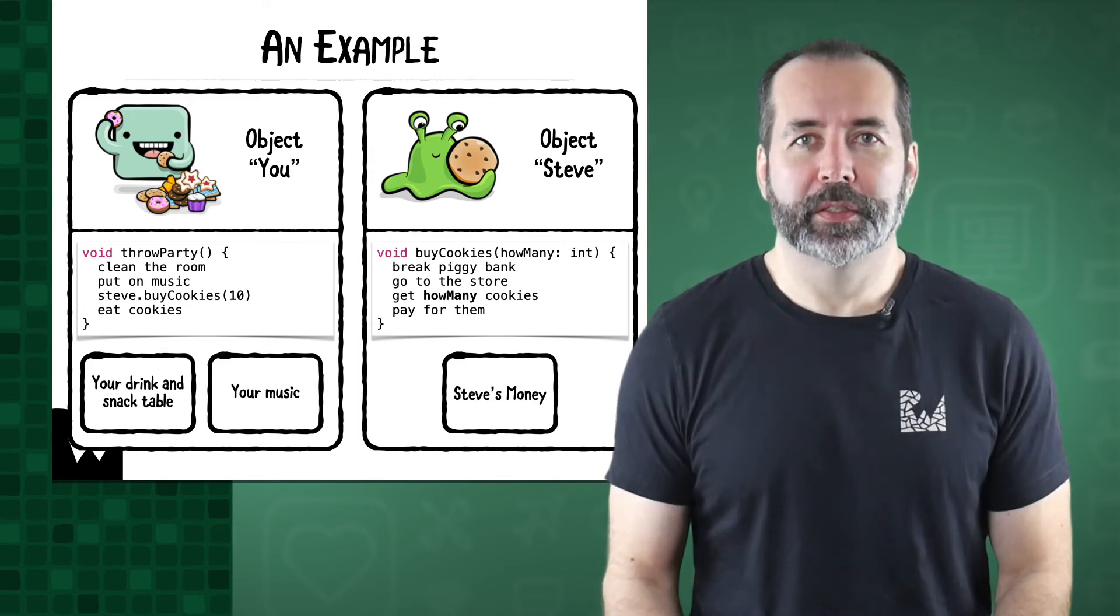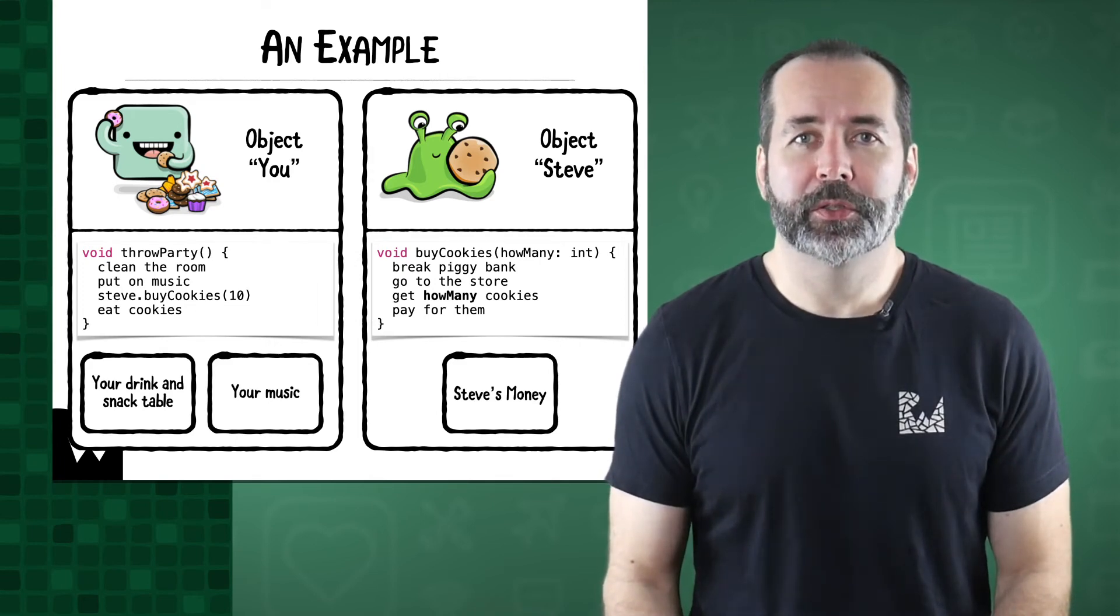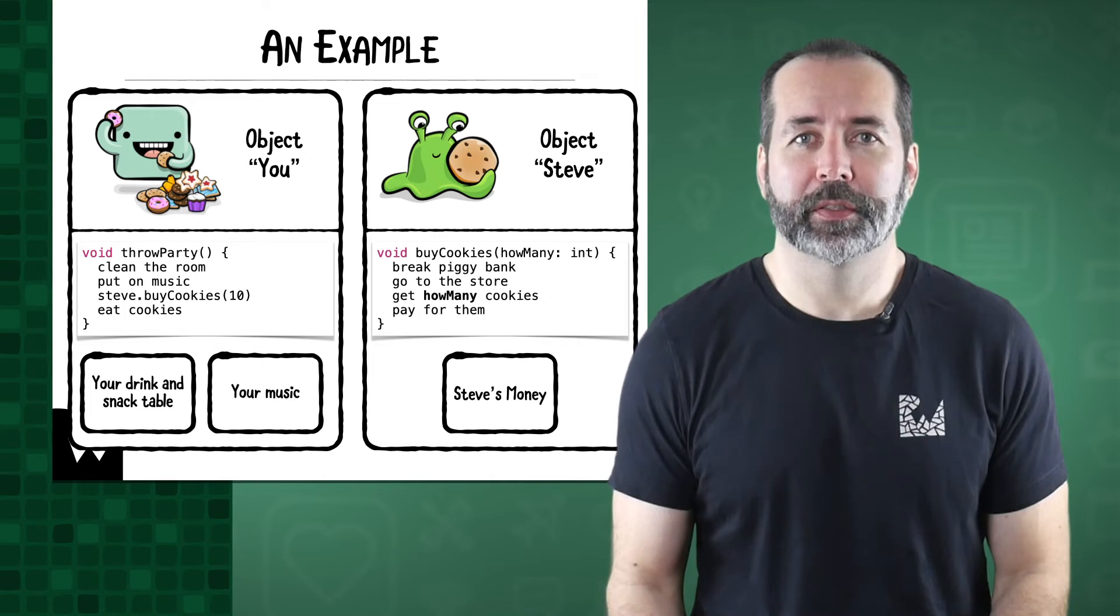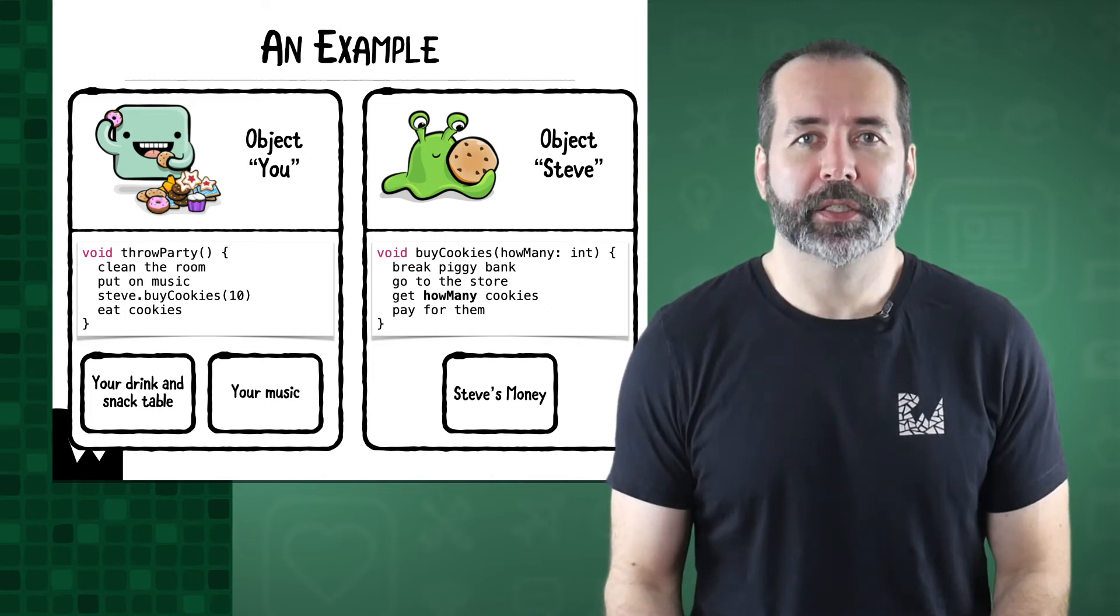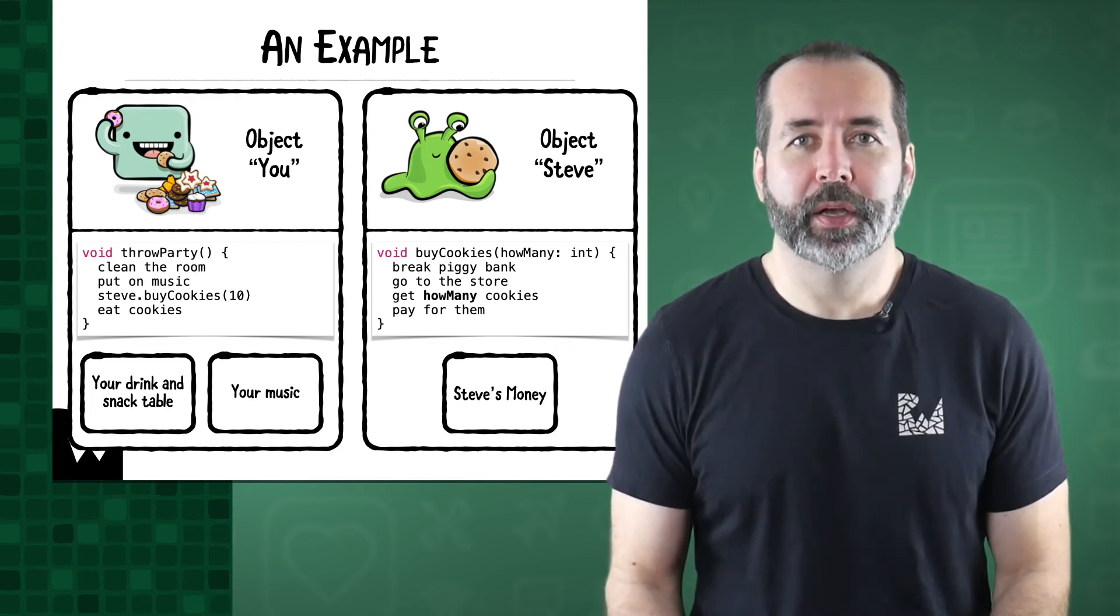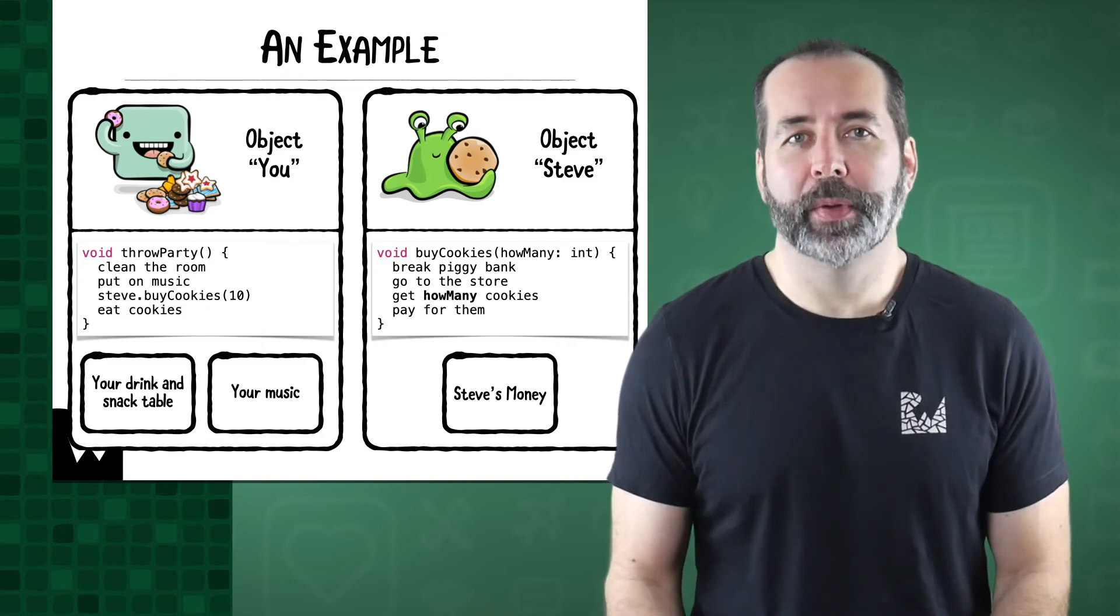The Steve object also has data. Before he goes to the store, he has money. At the store, he exchanges this money data for other, much more important data, cookies. After making that transaction, he brings the cookies back over to the party, and you add them to your drink and snack table. If he eats the cookies along the way, well, your program has a bug.